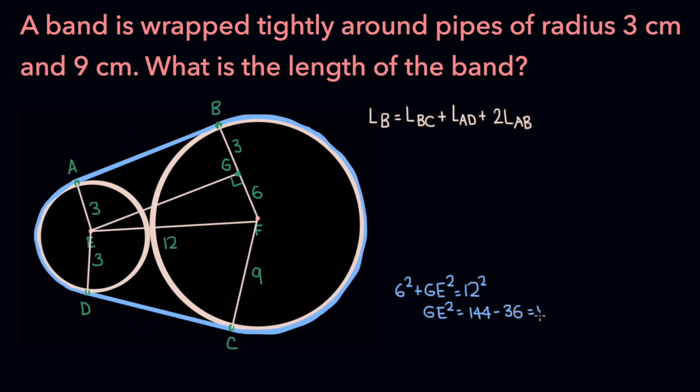144 minus 36 is 108, and the square root of 108 is 6 root 3. And so GE is of length 6 root 3, which means that AB is of length 6 root 3 as well.